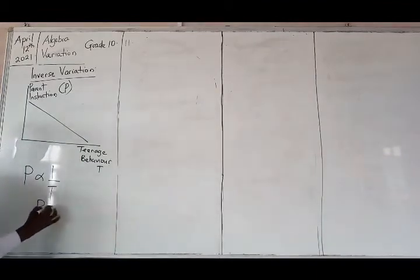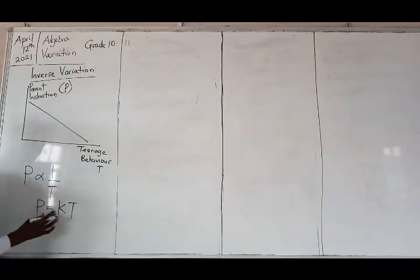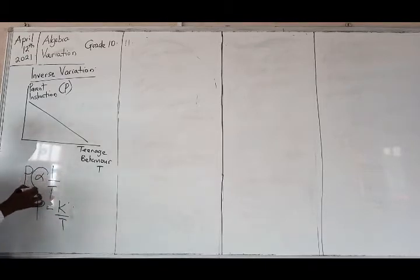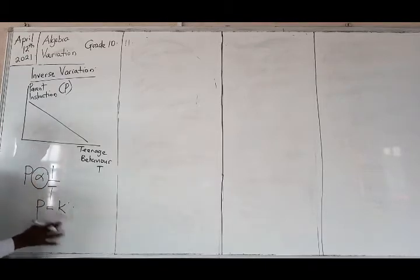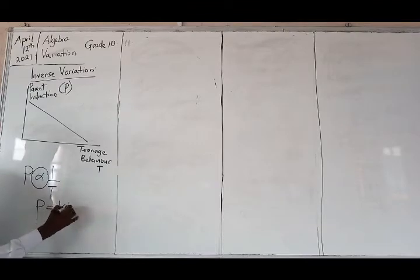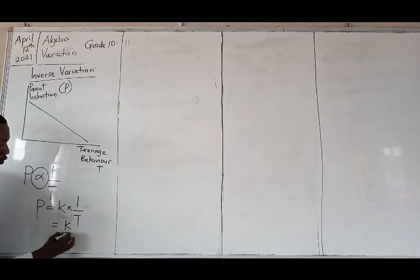The other details will still be the same, like P being equal to K over T. We'll replace this with K, so for the purpose of clarity, times 1 over T, which will be K over T.